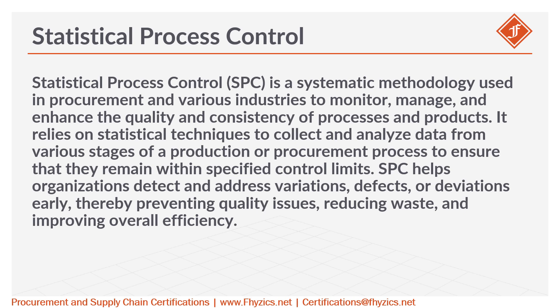Statistical Process Control, SPC, is a systematic methodology used in procurement and various industries to monitor, manage, and enhance the quality and consistency of processes and products. It relies on statistical techniques to collect and analyze data from various stages of a production or procurement process to ensure that they remain within specified control limits.